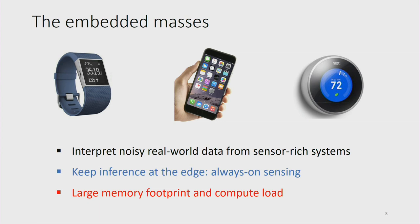This is a tough challenge because neural network inference requires a large memory footprint and lots of compute. There's strong motivation for hardware on mobile devices that can support this neural network inference workload, and that's what this talk is about.